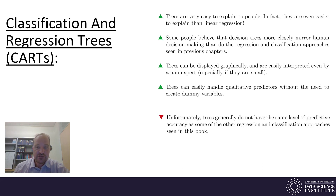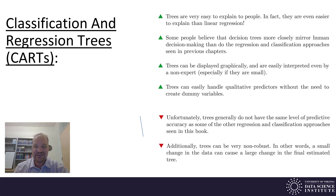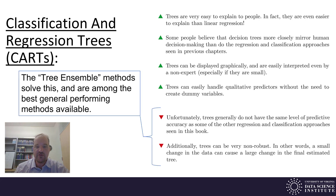As for disadvantages, trees generally do not have the same level of predictive accuracy as some of the other regression and classification approaches. Additionally, trees can be very non-robust — in other words, a small change in the data can cause a large change in the final estimated tree.